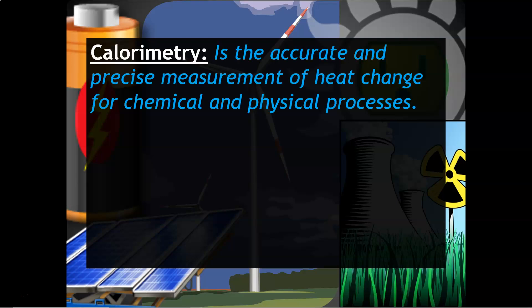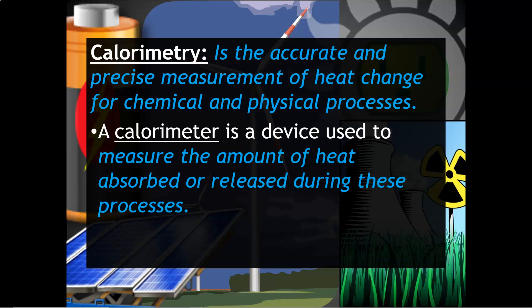Calorimetry is the accurate and precise measurement of heat changes for chemical and physical processes. A calorimeter is the device used to measure the amount of heat absorbed or released during these processes. You could have a really simple calorimeter or anything that's insulated that keeps heat from being exchanged with the environment, so a styrofoam cup is a great example.